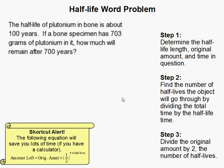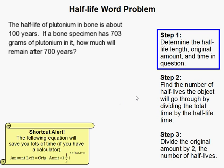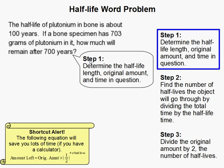A half-life word problem. So the first thing we need to do is find out the length of the half-life of the substance we have, the original amount of it we have, and then the time in question, or how long we're going to see that it decays.